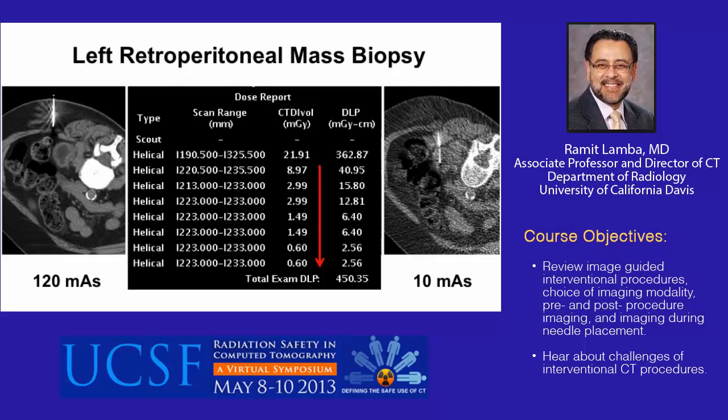One reason to use helical mode in favor of CT fluoroscopy is when the target is small and the patient is actively breathing, making localization of the needle tip challenging. I generally do not recommend using CT fluoroscopy for real-time needle placement because it results in longer exposure times. I use CT fluoroscopy only for intermittent needle check scans during the procedure.